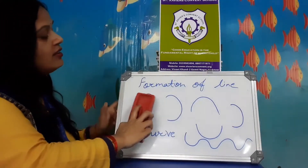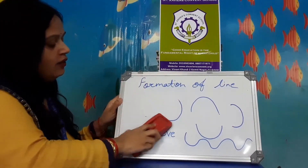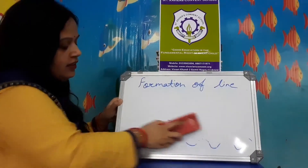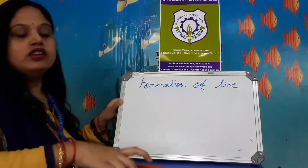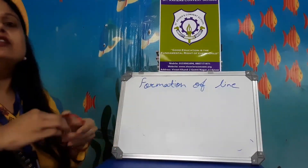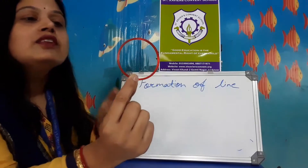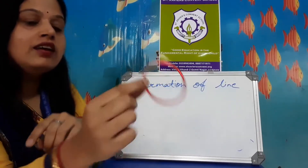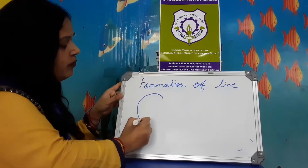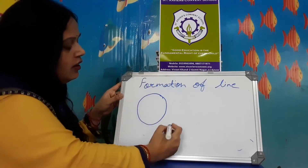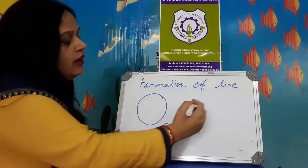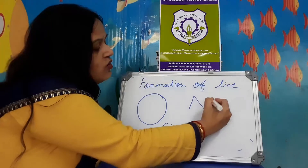Now next — circle. Have you seen a circle? Just see my angle — this shape is a circle. And this is zigzag.